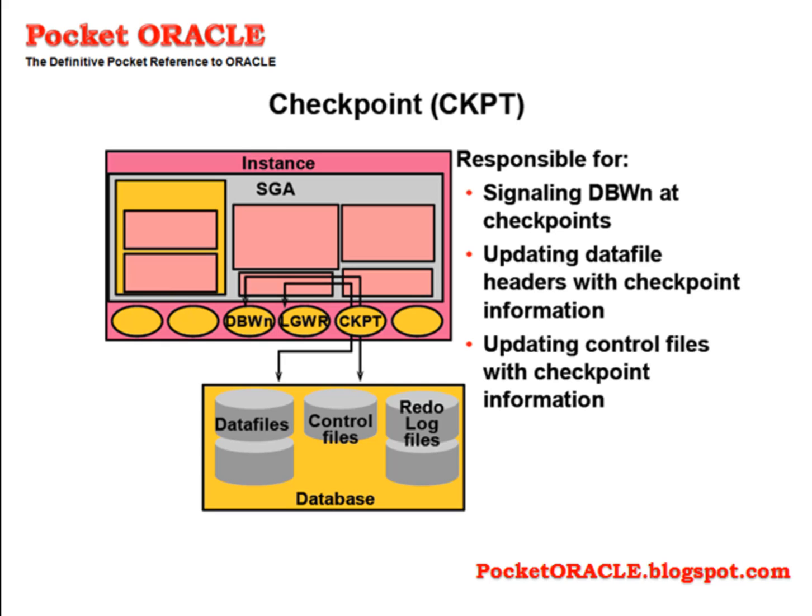The CKPT process is responsible for ensuring that, from time to time, the instance is synchronized with the database. In principle, the database is always out of date — there will be changes applied in memory that have not yet been written to the data files by DBWN, though the changes themselves will have been streamed out to the online redo log files by LGWR as they happen. There are occasions when it is necessary to force a write of all changed data from the database buffer cache to the data files to bring the database up to date. The CKPT process controls the frequency of this, and also updates data file and control file with checkpoint information.